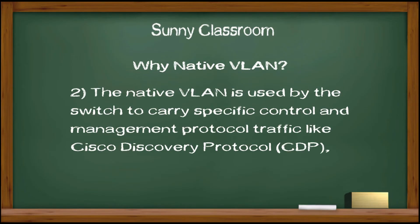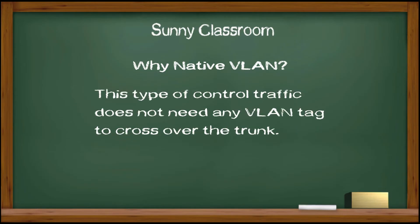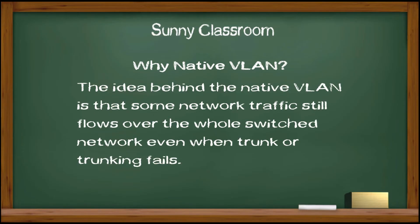Second, the native VLAN is used by the switch to carry specific control and management protocol traffic, like Cisco Discovery Protocol, VLAN Trunking Protocol, Spanning Tree Protocol, or other network management traffic. This type of control traffic does not need any VLAN tag to cross over the trunk. The idea behind native VLAN is that some network traffic still flows over the whole switched network, even when the trunk or trunking fails.